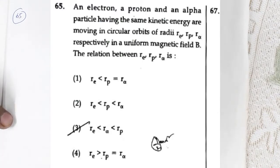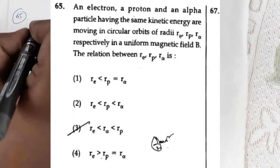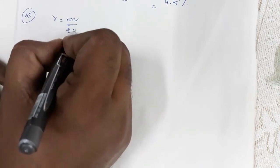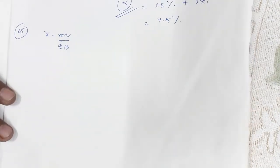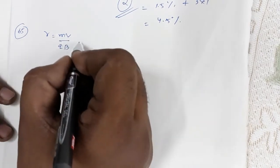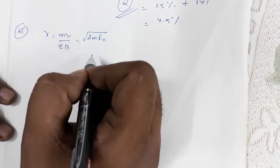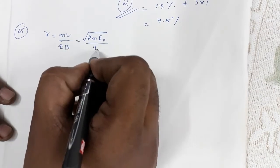Question number 65 reads: an electron, proton, and alpha particle having the same kinetic energy are moving in circular orbits in a magnetic field. You have to find the relation between their radii. The radius for a particle moving in a uniform magnetic field is r = mv/qB. Since kinetic energy Ek is given, this can also be written as r = √(2m·Ek) / (qB).